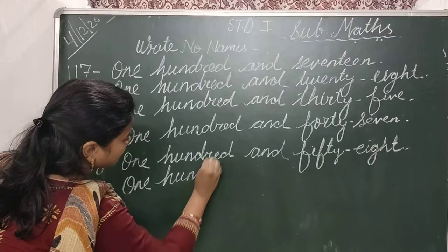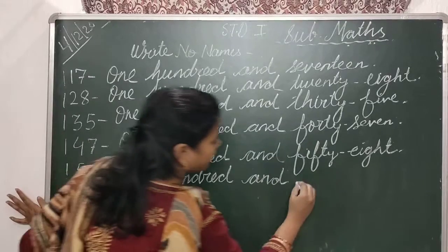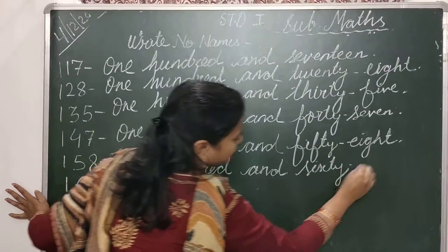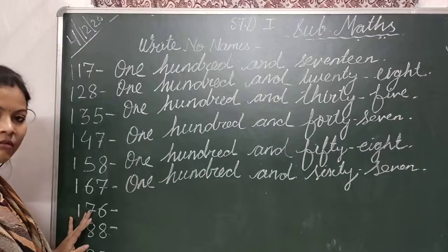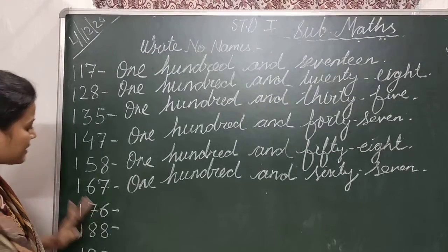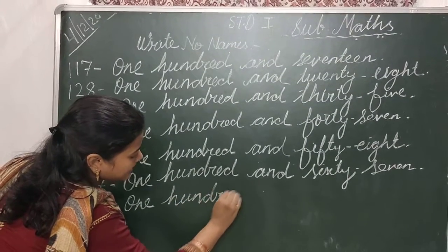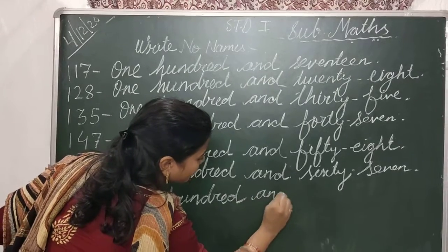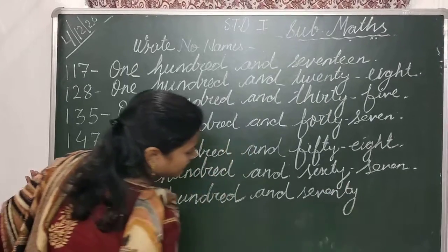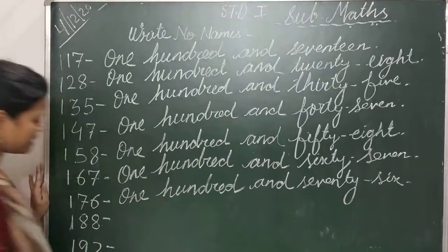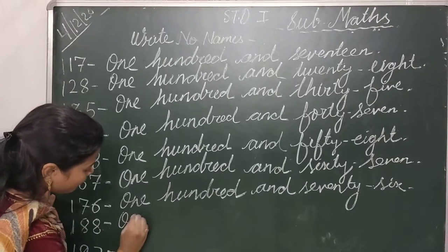167. O-N-E, one hundred, H-U-N-D-R-E-D, and sixty-seven. S-I-X-T-Y, sixty. S-E-V-E-N, seven. One hundred and sixty-seven. Then children, your next number is 176. O-N-E, one hundred, H-U-N-D-R-E-D, and seventy-six. S-E-V-E-N-T-Y, seventy. S-I-X, six.